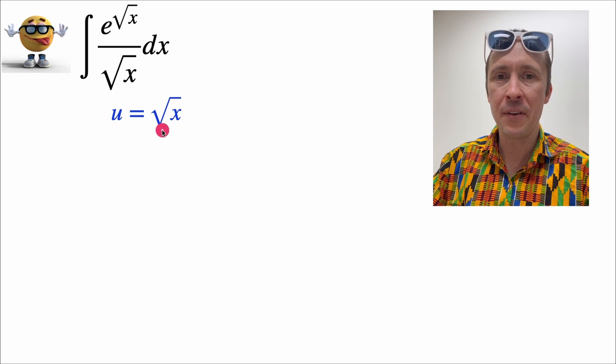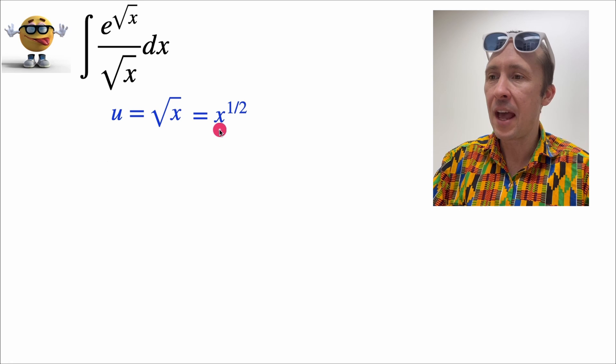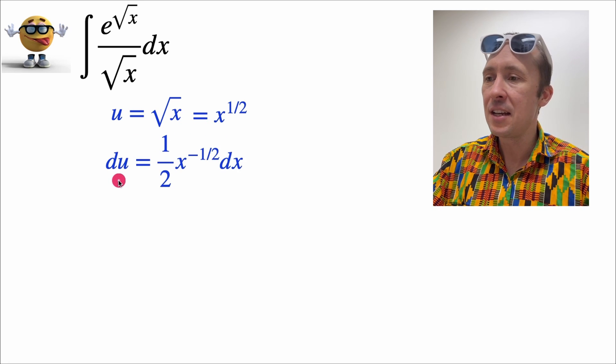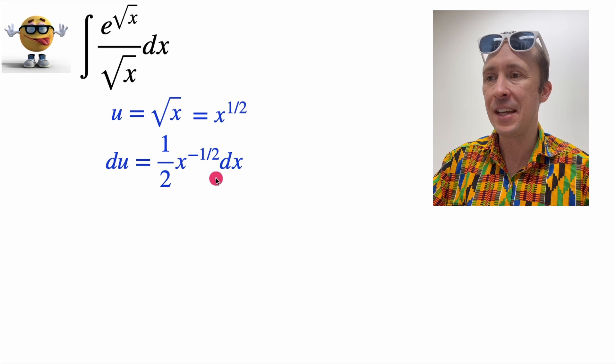So we'll set u equal to the square root of x. And in exponential form, this is x to the one-half. And if we take the derivative, we'll get du equals one-half times x to the negative one-half dx.